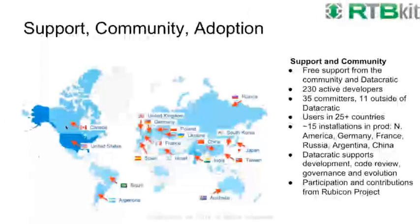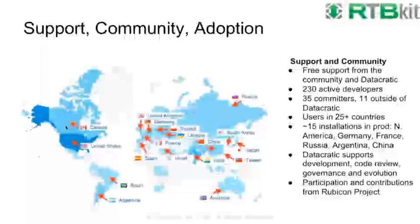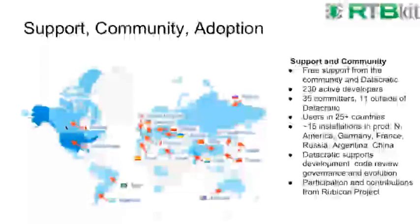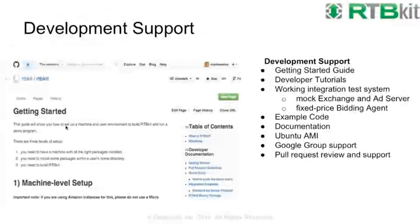To get started, go to GitHub and find the RTB Kit project. There are tutorials, getting started guides, and more than 50 pages of documentation on the wiki. There's also an AMI you can start with if you want to work on it in EC2. The main support channel is a Google group where Datacratic staff answer questions every day, and there are a handful of core outside contributors who are active on the list as well.